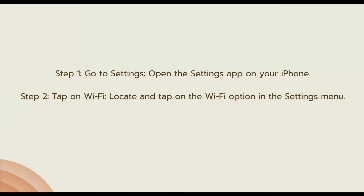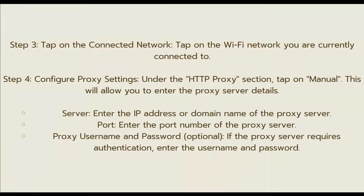The first step is to go to Settings — open the Settings app on your iPhone. The next step is to tap on Wi-Fi; locate and tap on the Wi-Fi option in the Settings menu. The third step is to tap on the connected network — tap on the Wi-Fi network you are currently connected to.